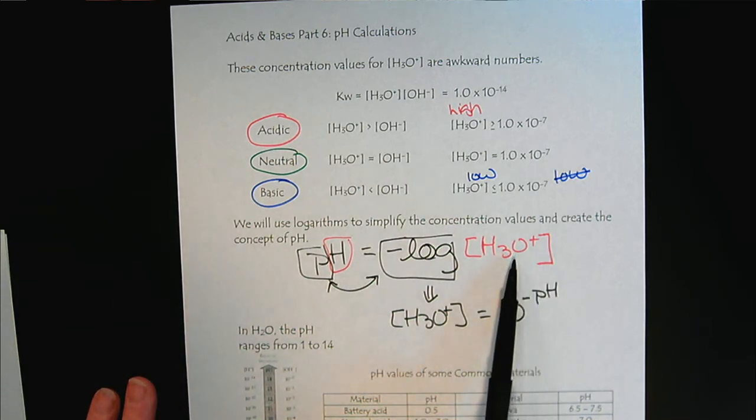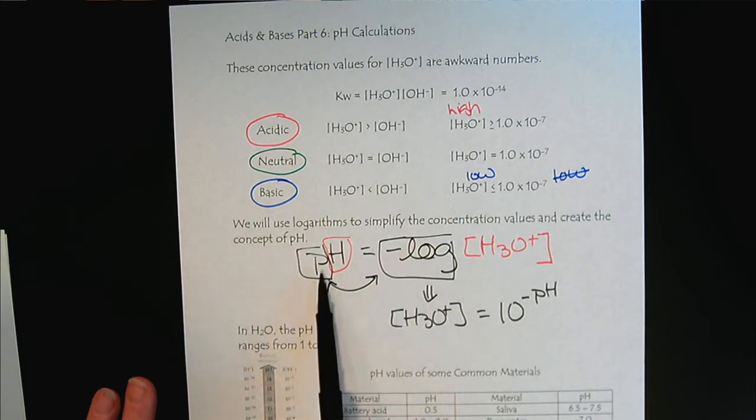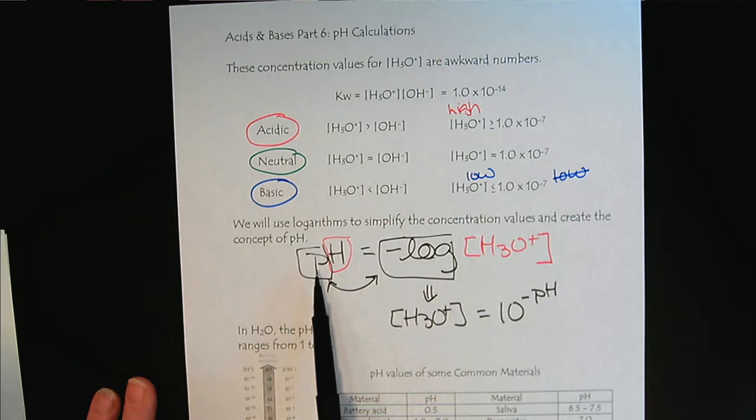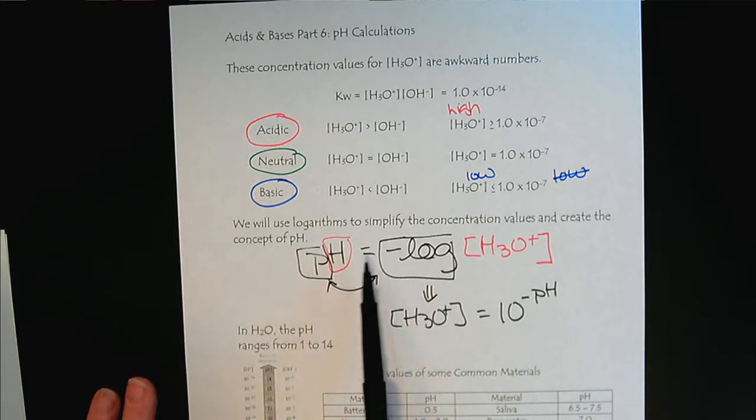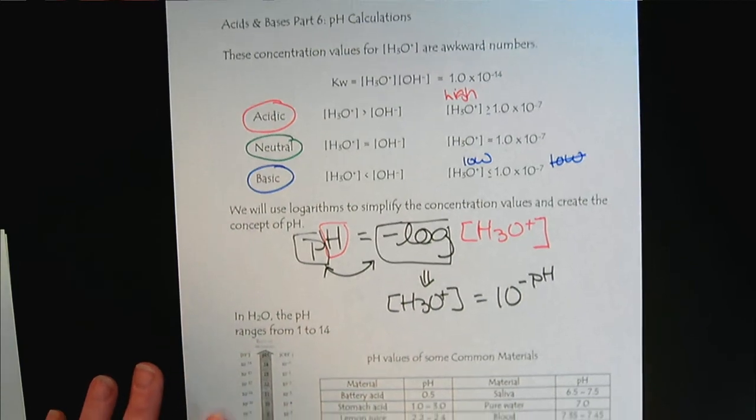So these are our two main fundamental calculations. If we know the hydronium ion concentration, we can take the negative log and calculate the pH. Or vice versa, if we've measured the pH with an electrode or something, we can determine the hydronium ion concentration. So these are two calculations and formulas that you want to memorize.